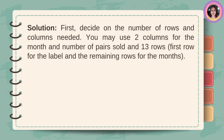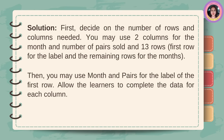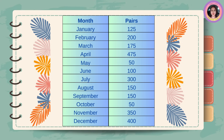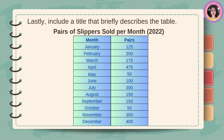Solution. First, decide on the number of rows and columns needed — you may use two columns for the month and number of pairs sold, and 13 rows: the first row for the label and the remaining rows for the months. Then, use 'Month' and 'Pairs' as labels for the first row. Allow the learners to complete the data for each column. Lastly, include a title that briefly describes the table: 'Pairs of Slippers Sold Per Month, 2022.'